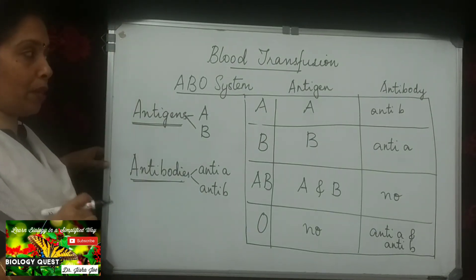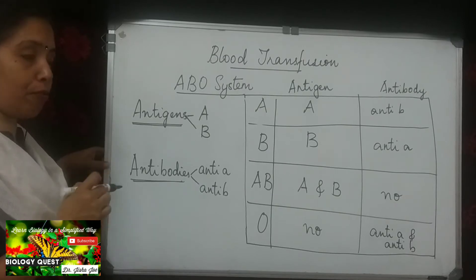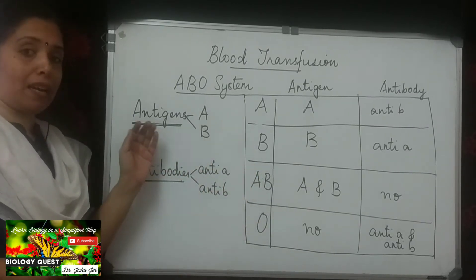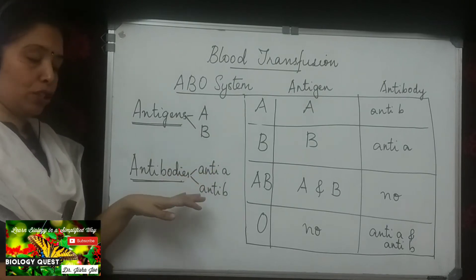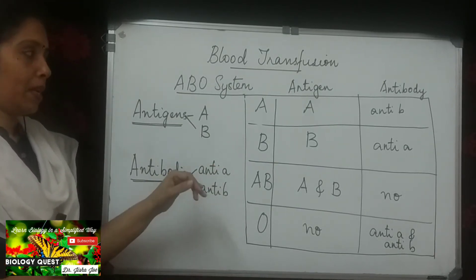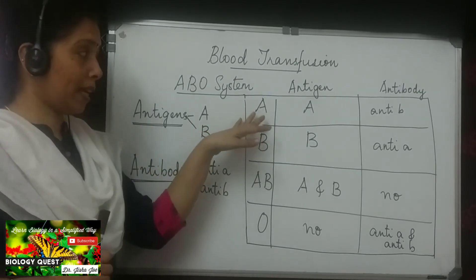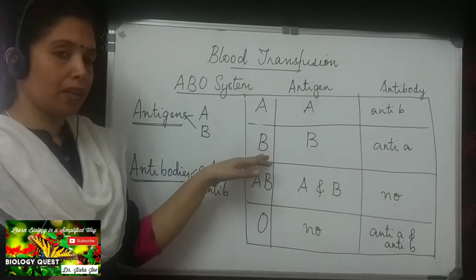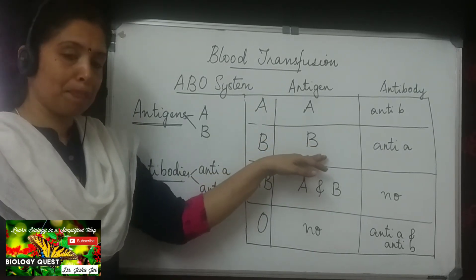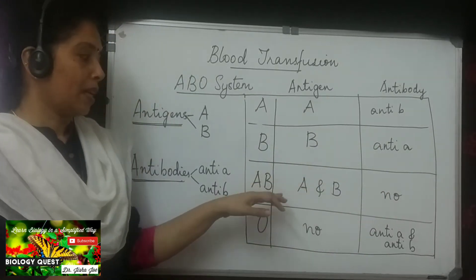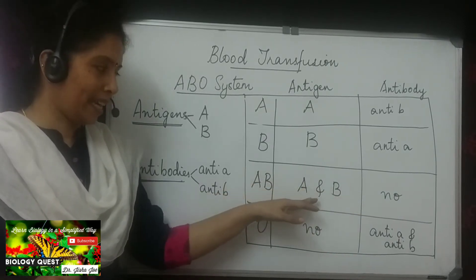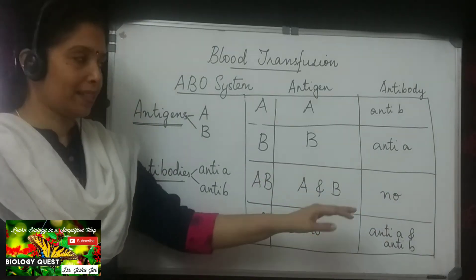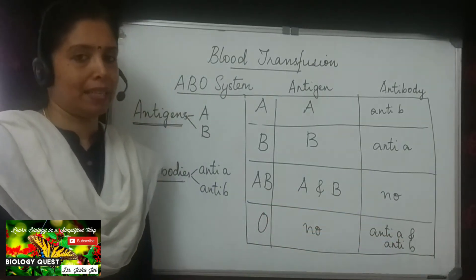So to summarize the ABO system: blood group A has antigen A and antibody anti B; blood group B has antigen B and antibody anti A; blood group AB has both antigen A and antigen B but no antibody; and blood group O has no antigen but has both antibodies anti A and anti B.